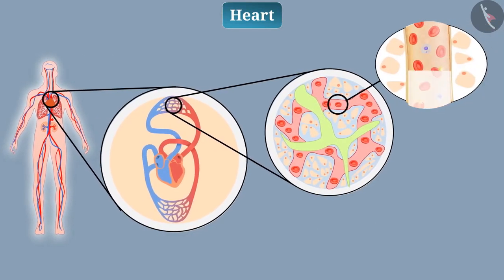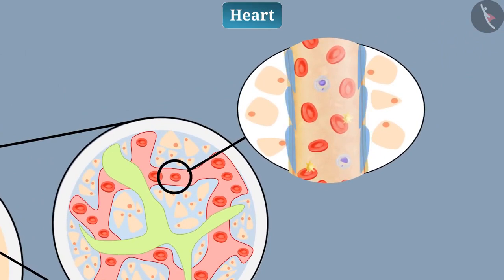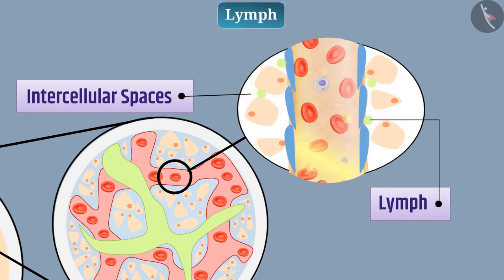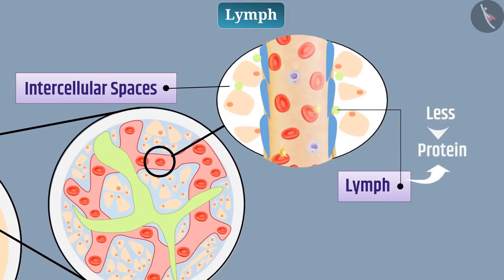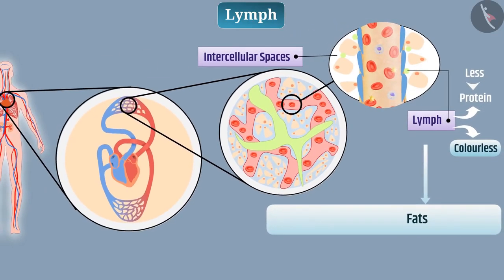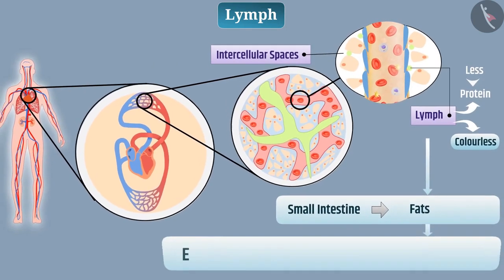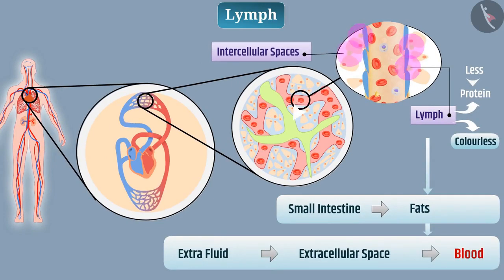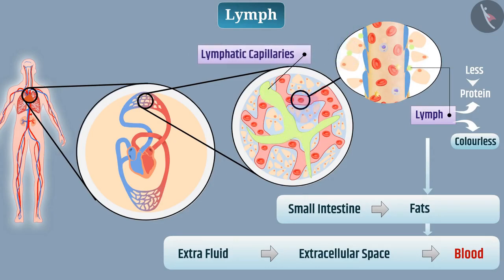Sometimes plasma, proteins, and cells present in the blood migrate from the pores of the capillary wall into the intracellular spaces of the tissue. Collectively, this fluid is called lymph. Lymph is similar to plasma but has less protein content and is colorless. Lymph carries fat that is digested and absorbed by the small intestine and carries extra fluid from extracellular space into the blood. Lymph enters lymphatic capillaries from the tissue spaces, forming lymph vessels that open into veins.